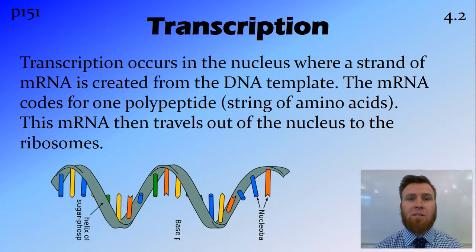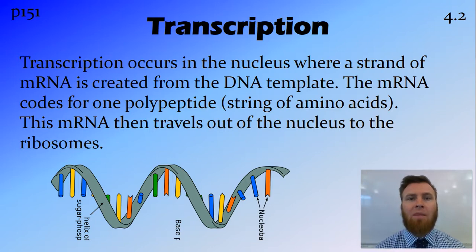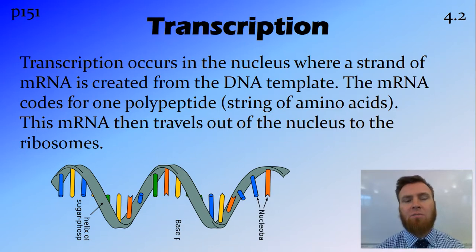So firstly, transcription. This is the step that occurs just beforehand. It occurs inside the nucleus where a strand of messenger RNA is made from the DNA template. This strand of messenger RNA codes for a polypeptide, and then it comes out of the nucleus to the ribosomes where this polypeptide is going to be made.